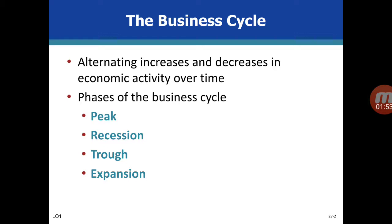Expansion is when the economy is recovering. People are getting jobs, there is an increase in demand, and suppliers are supplying more. They are hiring more and more laborers, so the economy is expanding and growing. So these are the four different cycles — peak is the up, recession is the downward, trough is the deepest part, and expansion is the increasing part of the business cycle.